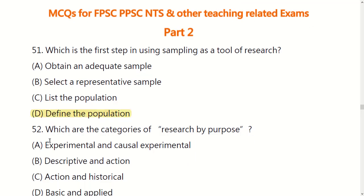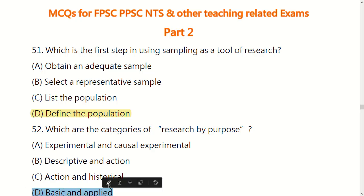Next question: which are the categories of research by purpose? Options are: A) experimental and causal experimental, B) descriptive and action, C) action and historical, D) basic and applied. The right answer is D: basic and applied.